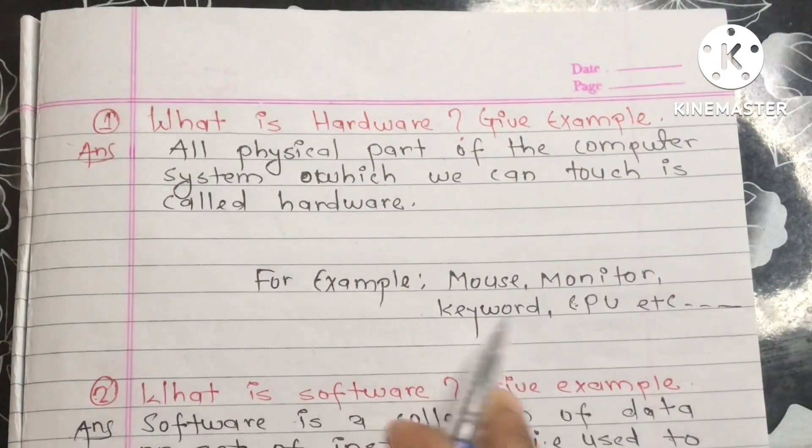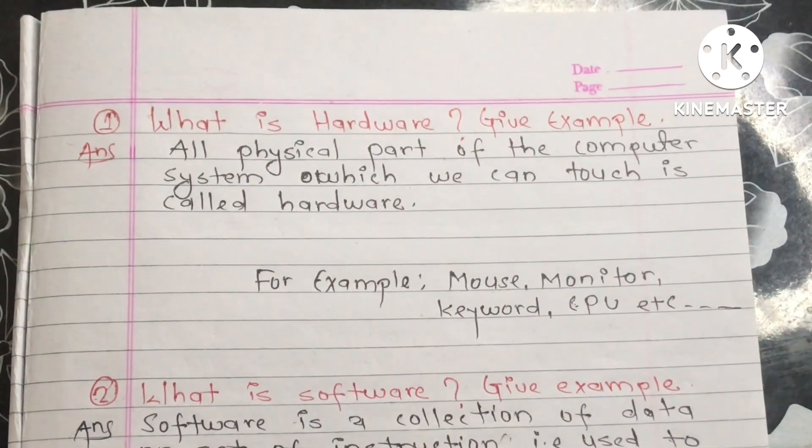For example, mouse, monitor, keyboard, CPU, etc. If you have a mouse, monitor, keyboard, CPU, etc., this is a physical part of a computer.